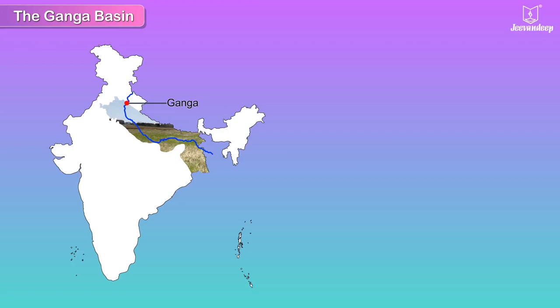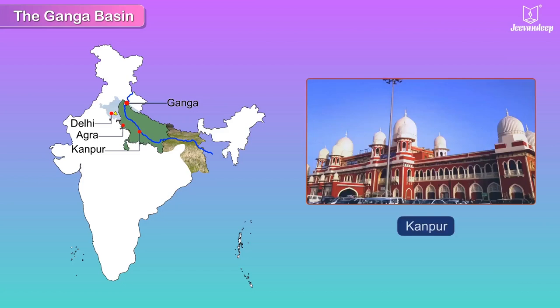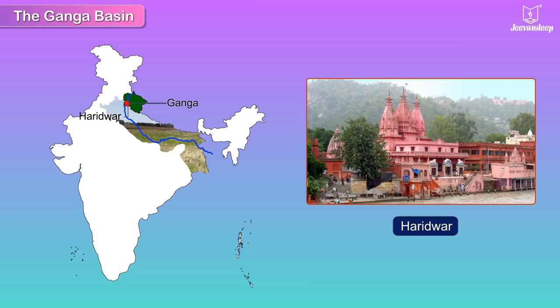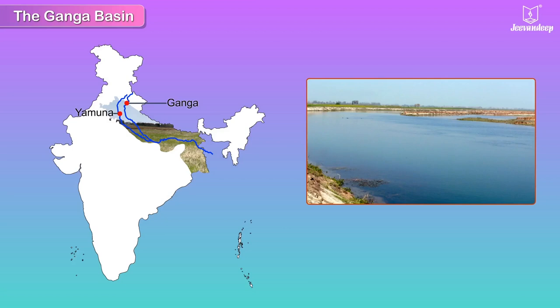Important cities located in the Ganga Basin include Delhi, Agra, Kanpur, Allahabad, Patna, and Kolkata. The sacred cities Haridwar, Ayodhya, and Varanasi are also located in the Ganga Basin.